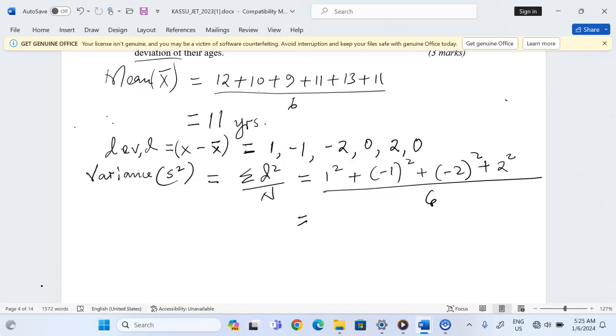1 squared becomes 1, negative 1 squared becomes 1, negative 2 squared becomes 4, and 2 squared becomes 4. So we have 4 and 4, that's 8, plus 1 and 1 becomes 10.